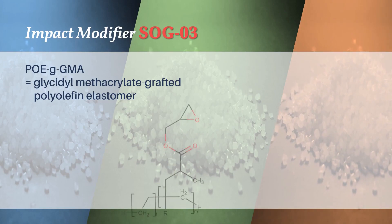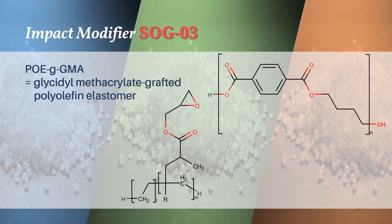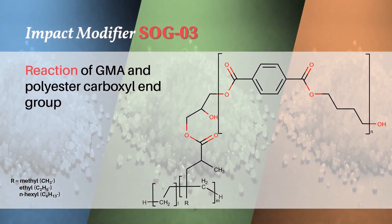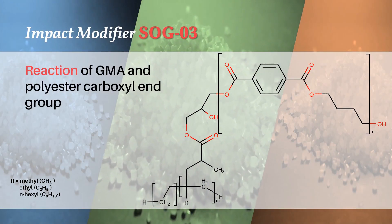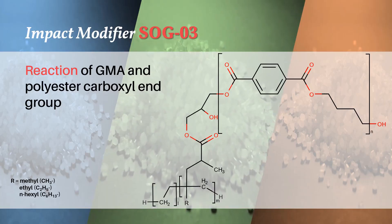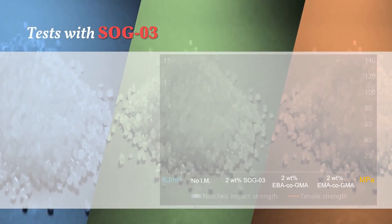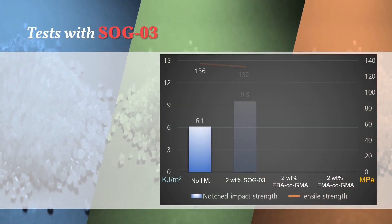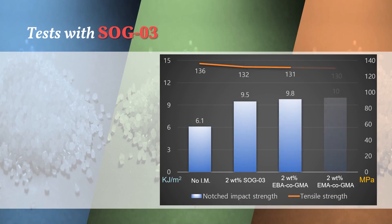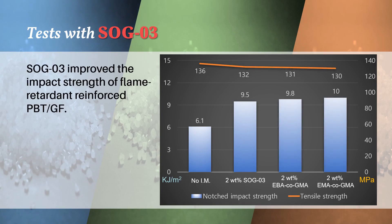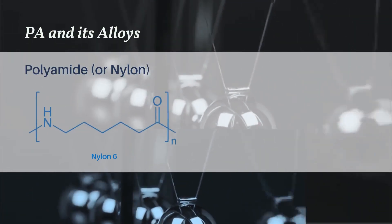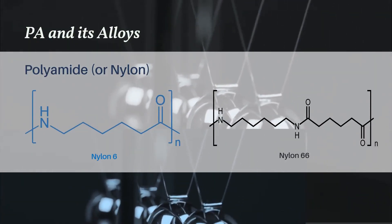SOG 03 is a glycidyl methacrylate grafted polyolefin elastomer; its epoxy groups react with the end groups of PBT. When SOG 03 was tested with glass fiber reinforced PBT, it was found that impact strength was improved by 56% with little loss in tensile strength.